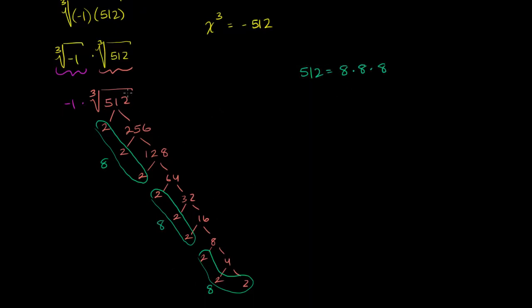And so we can rewrite this expression right over here as the cube root of 8 times 8 times 8. So this is equal to negative 1, or I could just put a negative sign here. Negative 1 times the cube root of 8 times 8 times 8. So we're asking our question, what number can we multiply by itself three times, or to the third power, to get 512? Which is the same thing as 8 times 8 times 8. Well clearly, this is 8.